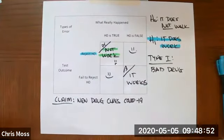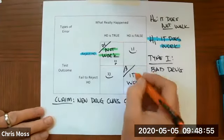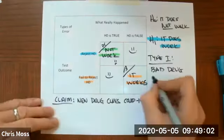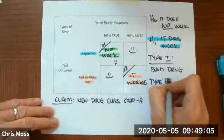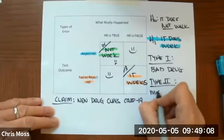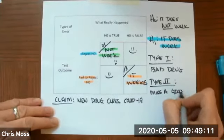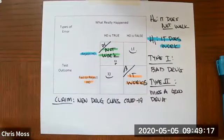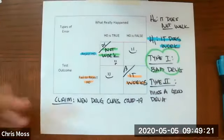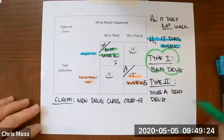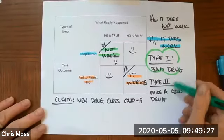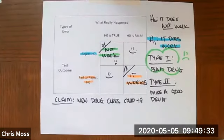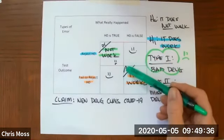The type 2 error, we think the drug does not work, but indeed it does. So in the type 2 error, we miss a good drug that would help. In the grand scheme of things, we really try to minimize this here. This is really a bad thing to happen. We can always do more tests and possibly pick up that drug, but if a bad drug gets into the system, it can do a lot of harm. So, we really try to minimize alpha, even if we get more beta at the end of the day.